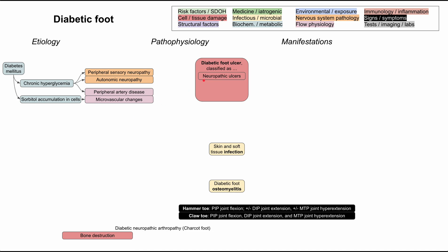One type of ulcer is called a neuropathic ulcer, and this one is related to the neuro changes induced by chronic hyperglycemia. Another type of ulcer is called an ischemic ulcer, and this one is associated with the microvascular and cardiovascular changes associated with diabetes. There's also a type in between with features of both — the neuro-ischemic ulcer — and all of these etiologies predispose you to it.